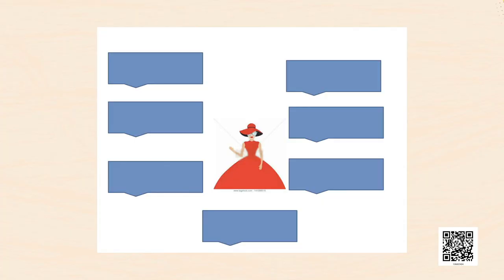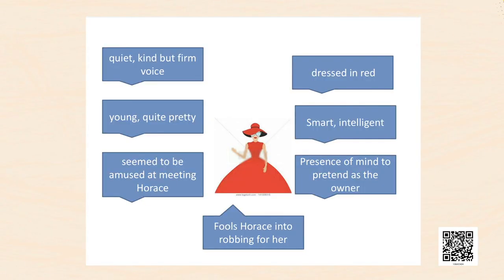Let us continue and develop the character of the lady in red. Look at the graphic organizer on your screen and try to fill in the blanks. Remember, as we have discussed, a character has two things: physical traits and behaviour traits. The lady had a quite kind but firm voice. She was young and quite pretty. She seemed amused at meeting Horace. She was dressed in red. She was smart, intelligent, had presence of mind to pretend as the owner of the house, and was able to fool Horace into robbing for her.